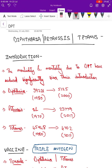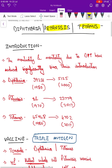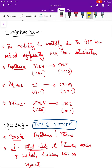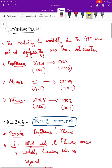Hello friends, today's video on the immunization series will be about DPT vaccination — Diphtheria, Pertussis, and Tetanus. Once introduced in the Expanded Immunization Schedule by the Indian government, the morbidity and mortality due to these three diseases has significantly reduced.